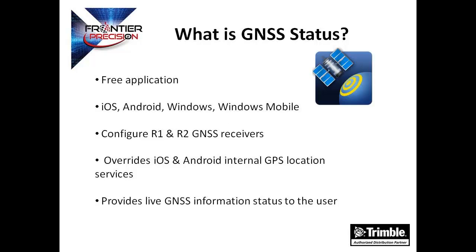You might be wondering, what is the Trimble GNSS Status Utility? It's a free downloadable application for iOS, Android, Windows PC, or Windows Mobile that will provide a platform for the user to configure his or her GNSS receiver. Currently, it is designed to work with the Trimble R1 and R2 GNSS receiver. The user is able to configure mainly two things: the primary and secondary real-time correction source, as well as the NMEA output if the receiver has that option. The configuration will override iOS and Android internal GPS location services, and the application will provide live GNSS information status, such as the estimated real-time accuracy in the field.